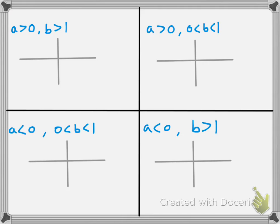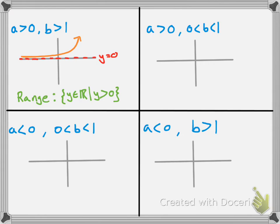In the first case, a greater than 0 and b greater than 1, the graph approaches a dotted horizontal asymptote at y equals 0 on the left but never actually touches it. The graph is entirely above the x-axis, so we have only y values bigger than 0. That means our range is y is an element of the real numbers such that y is greater than 0 — all possible y values bigger than 0.